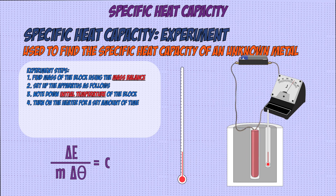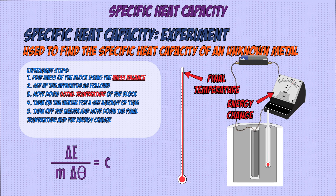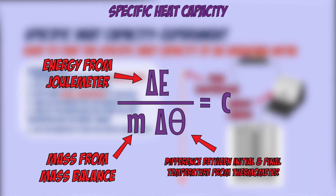The metal block will heat up, its temperature will rise, and the joule meter's reading will keep increasing as the experiment goes on. After some time, you can turn off the heater and note down the temperature and joule meter readings. You can then use the specific heat capacity equation to find out what it is.